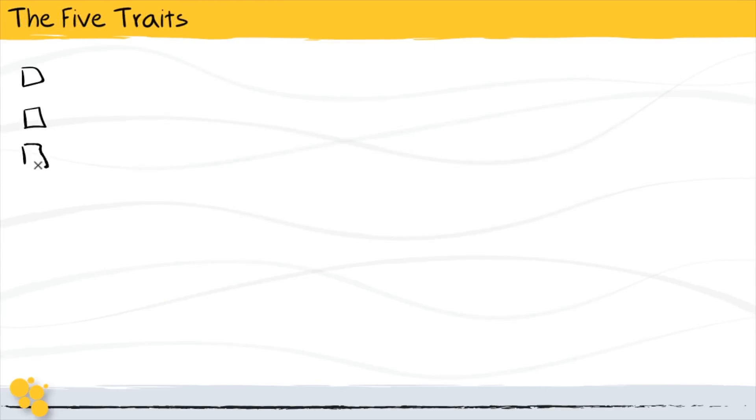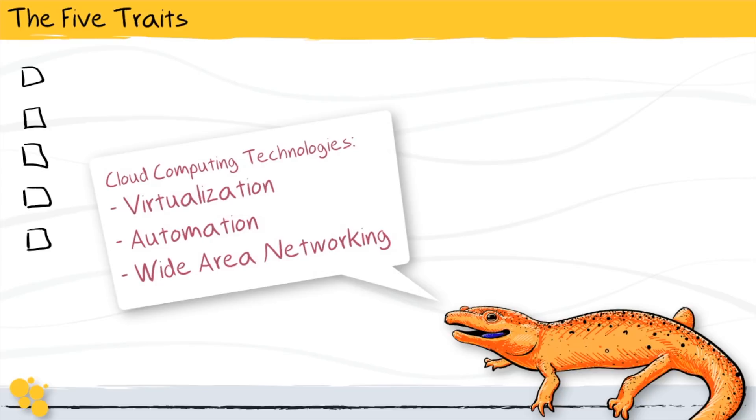As we dig into these five characteristics of cloud computing, keep in mind the three core technologies I talked about in previous lessons: virtualization, automation, and wide area networking. All of these traits come directly from those technologies.